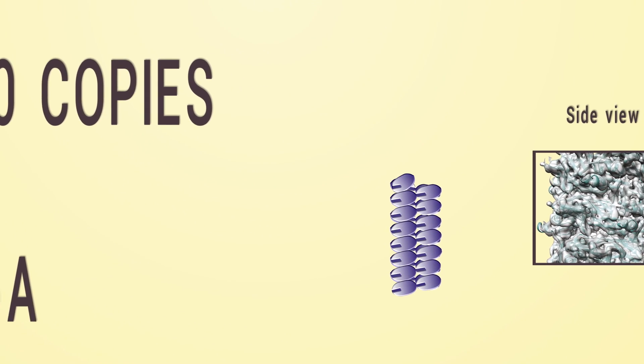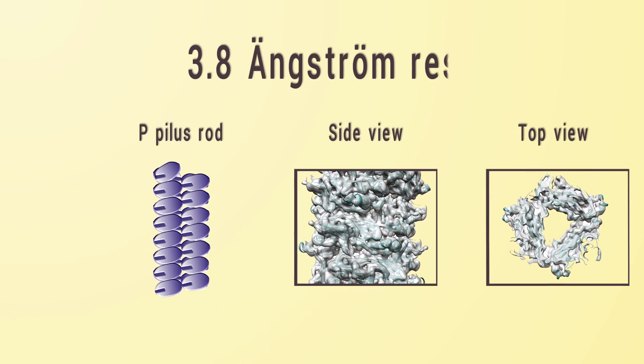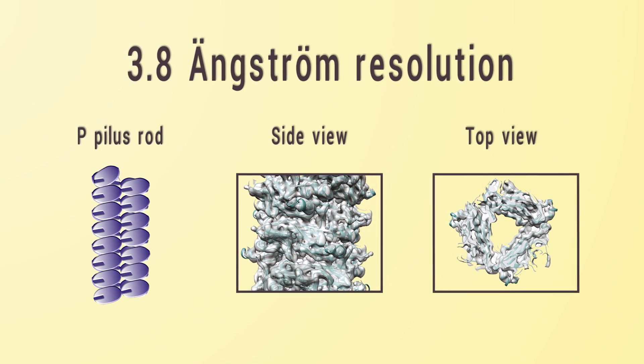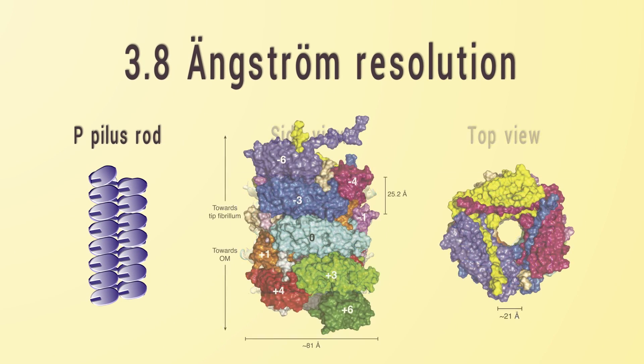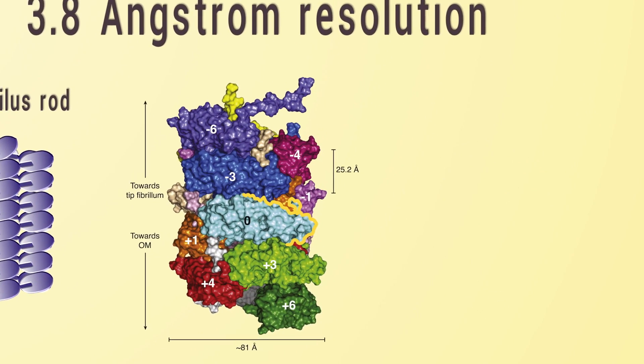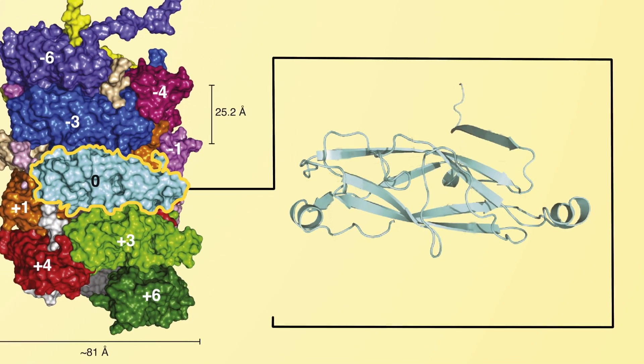In this article we solved the 3.8 angstrom resolution structure of the type P pilus rod using cryo-electron microscopy. The structure of the PAP A monomer could be built in its entirety.